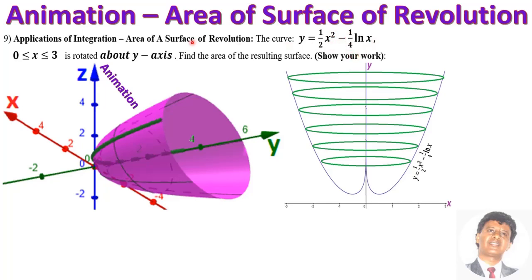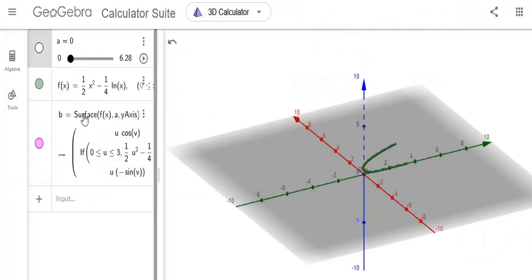The next animation is y equals one-half x squared minus one-fourth ln x, and we're going to rotate this around the y-axis. This is the volume that is generated and we'll look at this animation. The curve is y equals one-half x squared minus one-fourth ln x, and it is about to rotate around the y-axis.